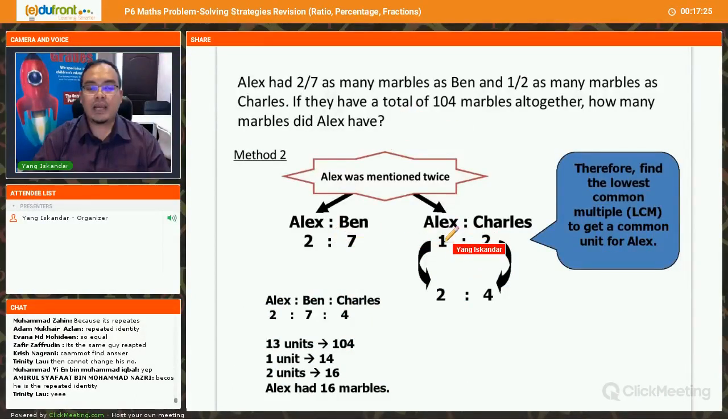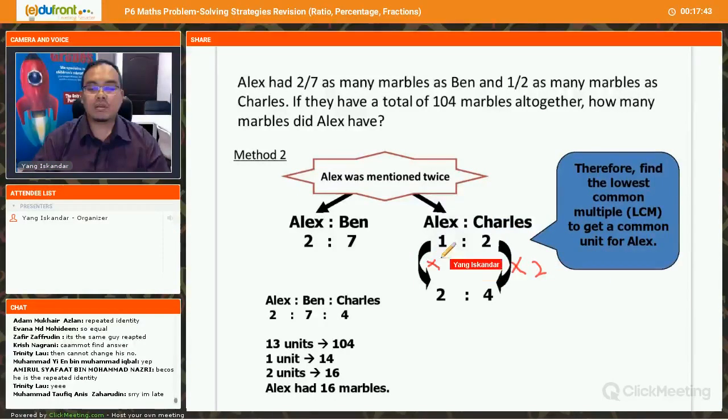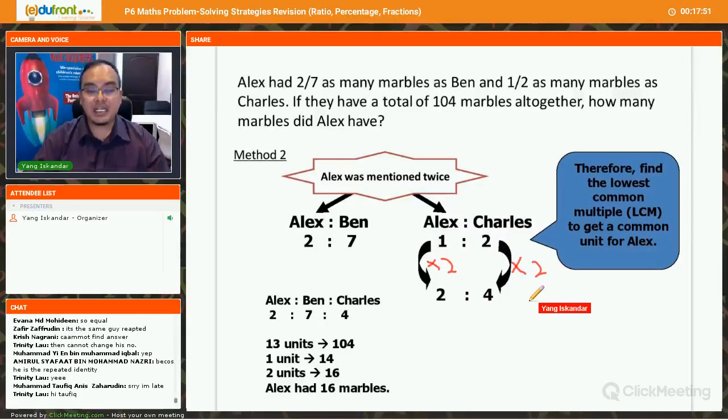Alright? So you can see here. Now Alex 1 unit, Charles 2 units. So using the concept of equivalent ratio, we multiply 2 with 1 here and Charles also, we multiply by 2. Okay? Times 2. Here also, times 2. Alright? So we multiply by 2, multiply by 2, so you get 2 is to 4. Now 1 is to 2 and 2 is to 4 is exactly the same. It is equivalent ratio.